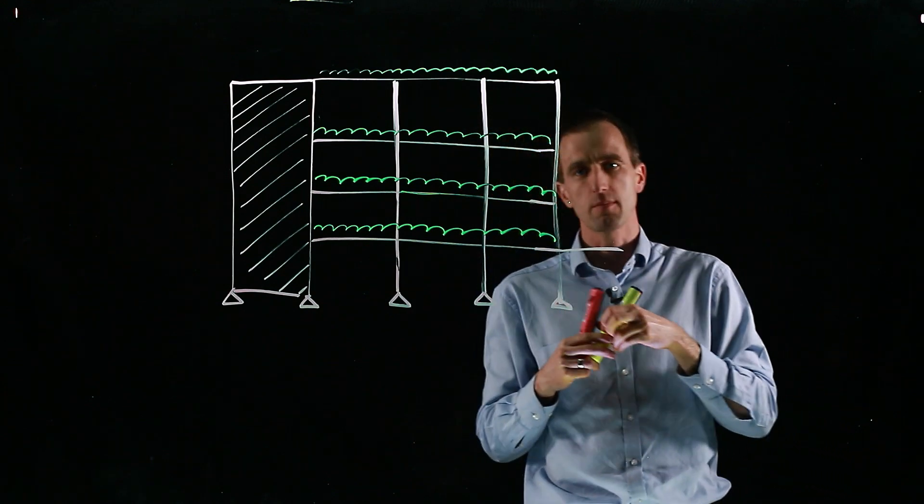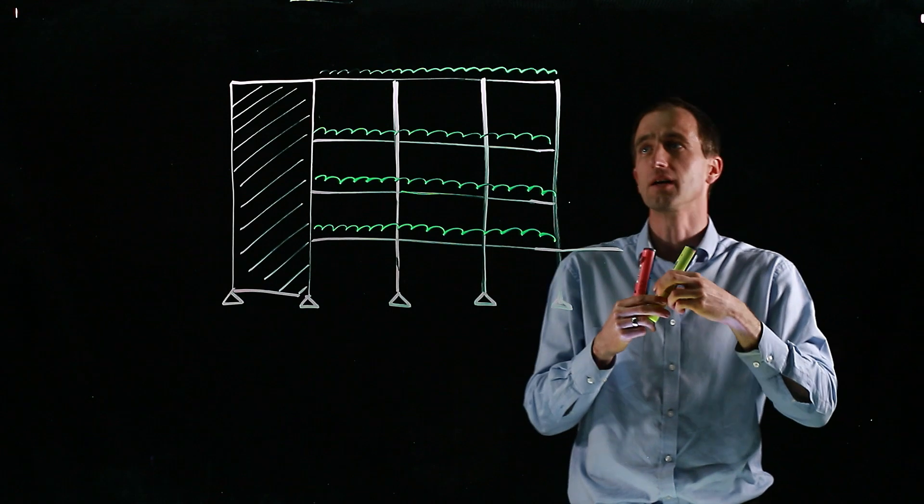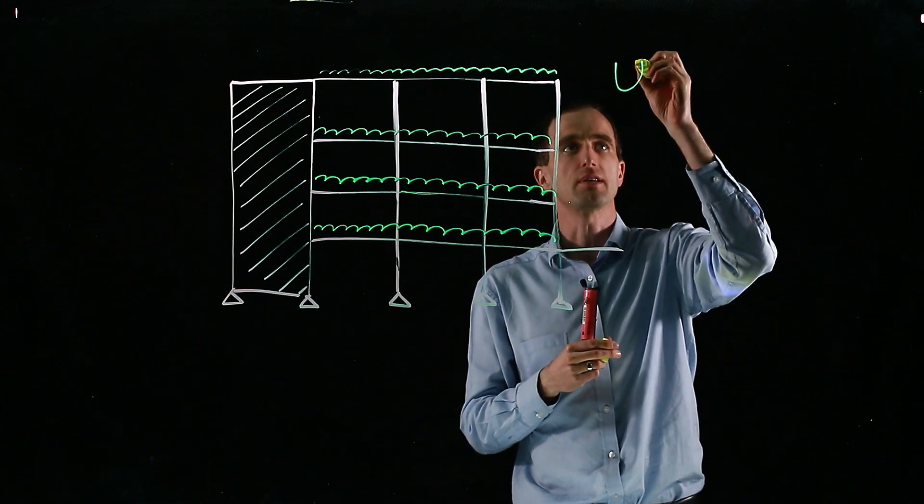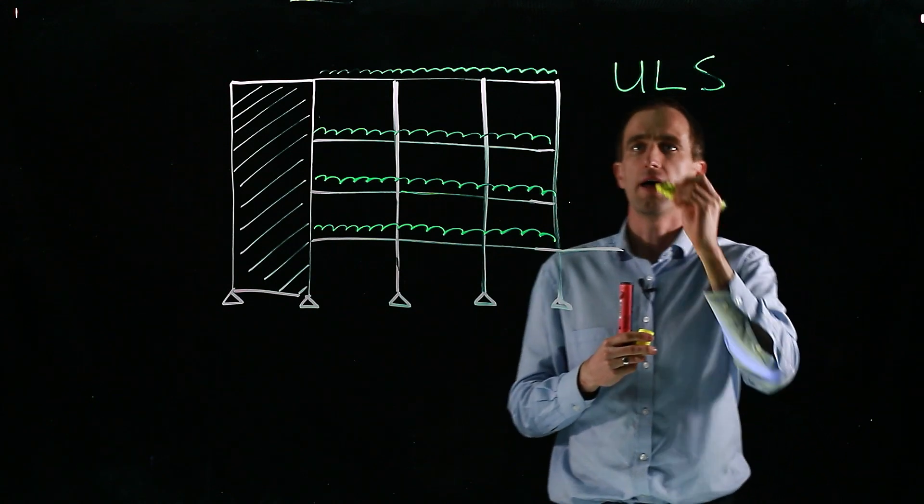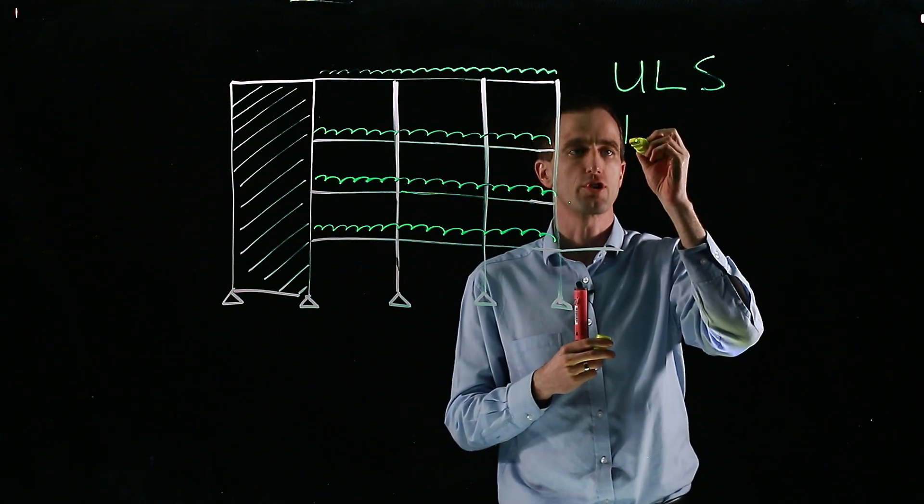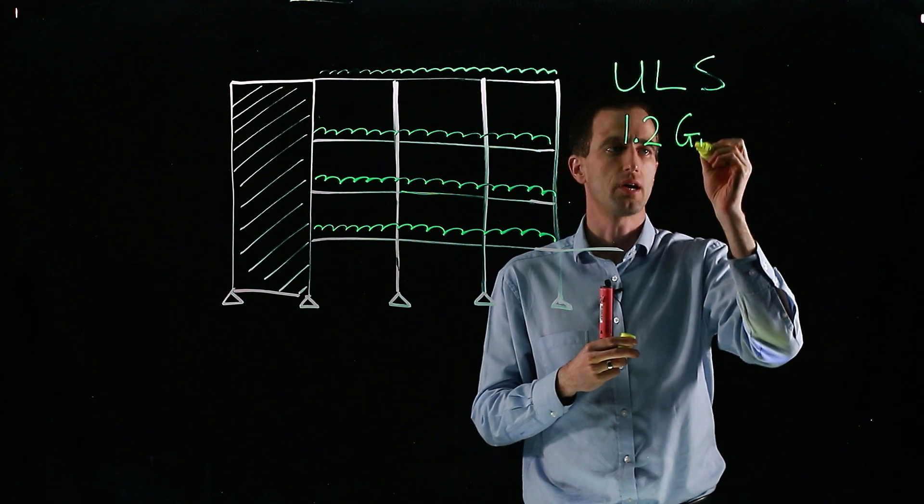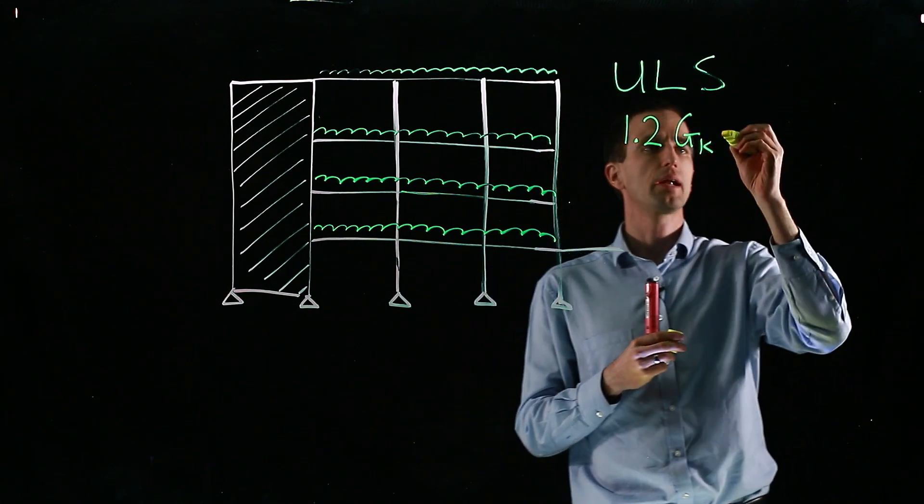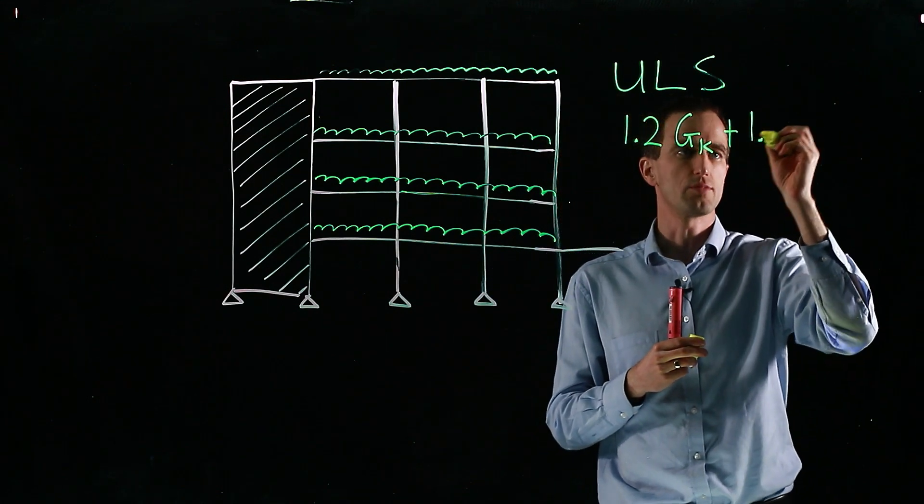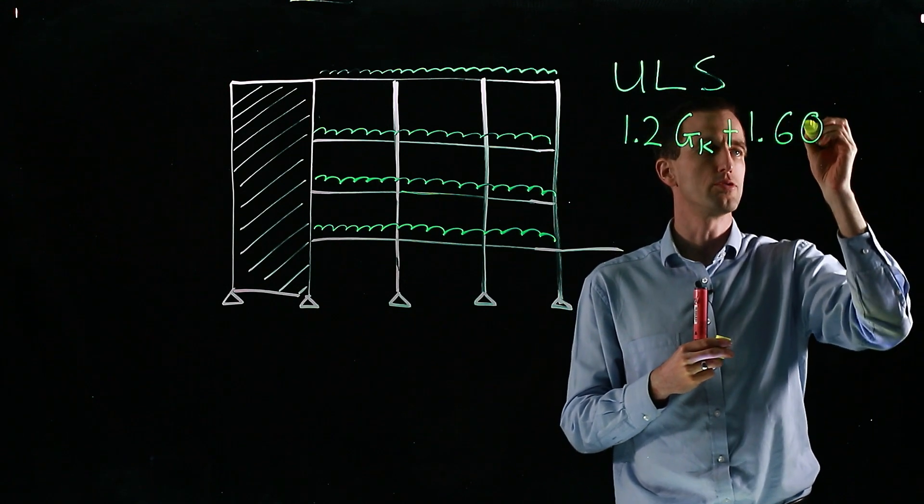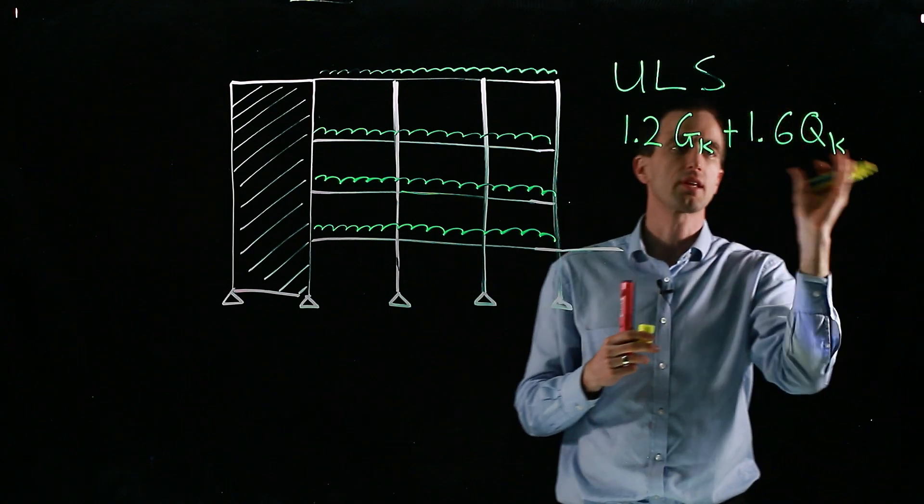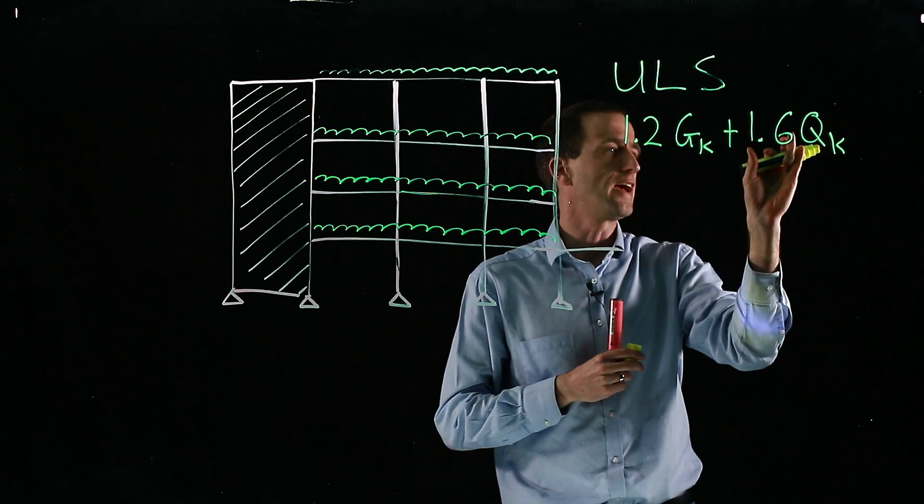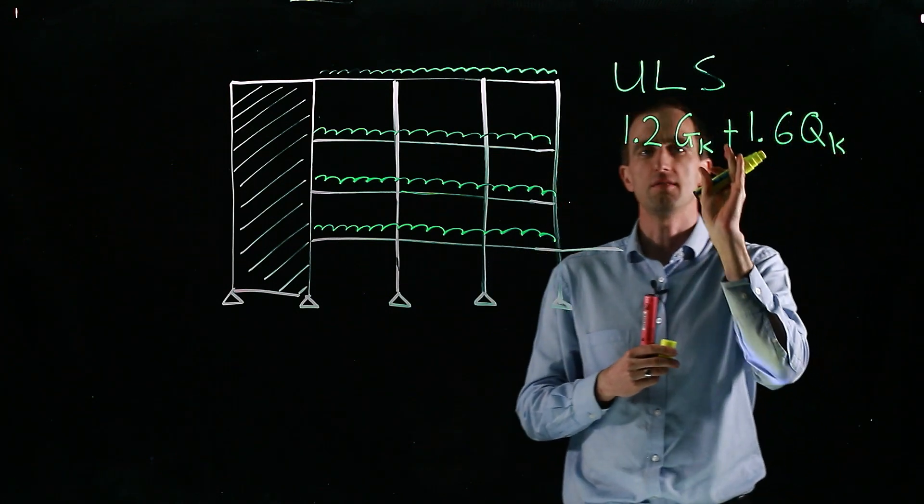Now at ambient temperature, for normal structural engineering, we use what's called the ultimate limit state, the ULS. And this is typically, depending on which code you use, around 1.2 times your dead load, G, plus 1.6 times your imposed or live load. So that's the furniture, the people, everything that varies with time. We have a higher factor of safety.